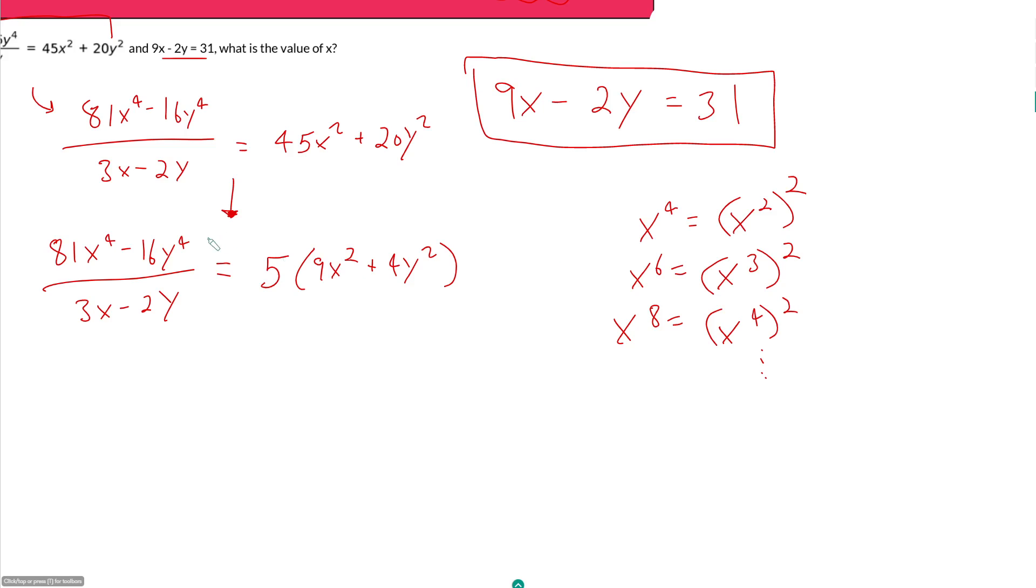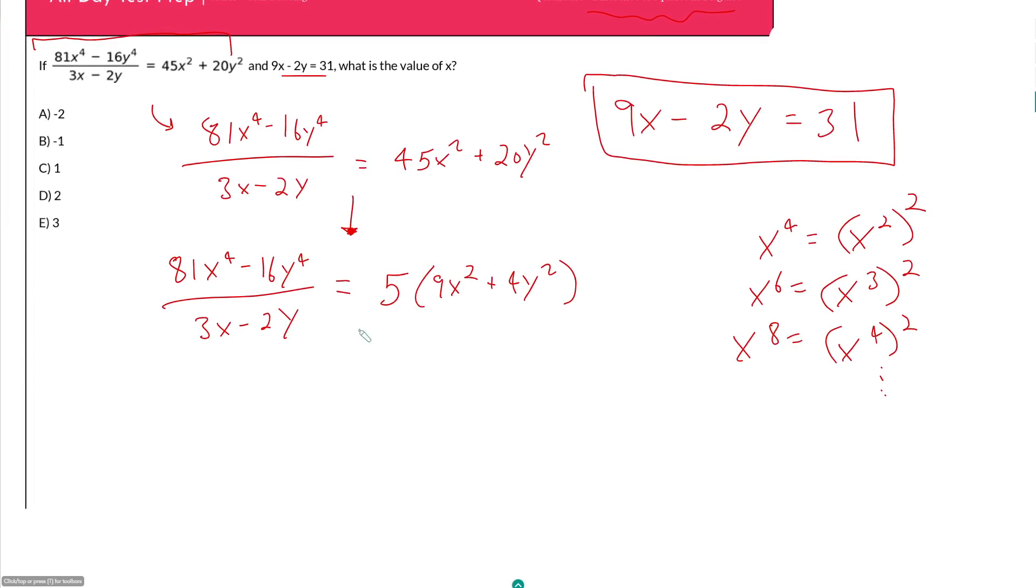So if we're trying to extract a difference of squares from here, it would be in this format, a squared minus b squared, which means our a squared would be equal to 81x to the 4th. And therefore, our a is the square root of this, which would be 9x squared.